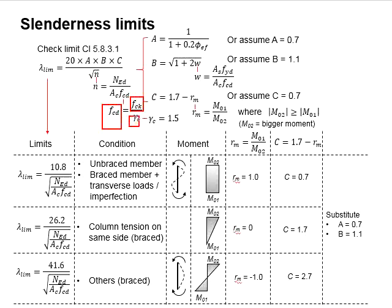The factor of safety for concrete is 1.5. As for the factors A, B, C, the equations are given here. These factors are normally assumed to be 0.7 for A, 1.1 for B, and 0.7 for C.